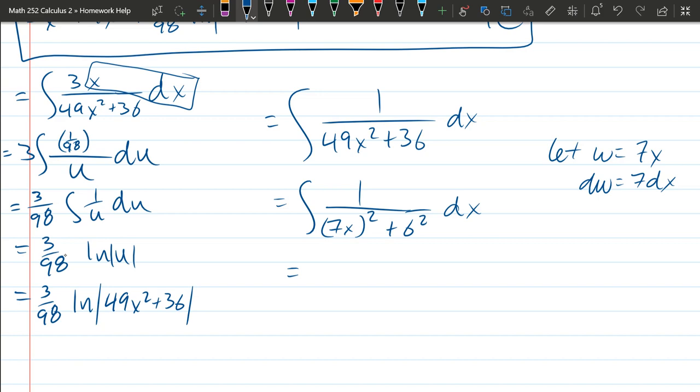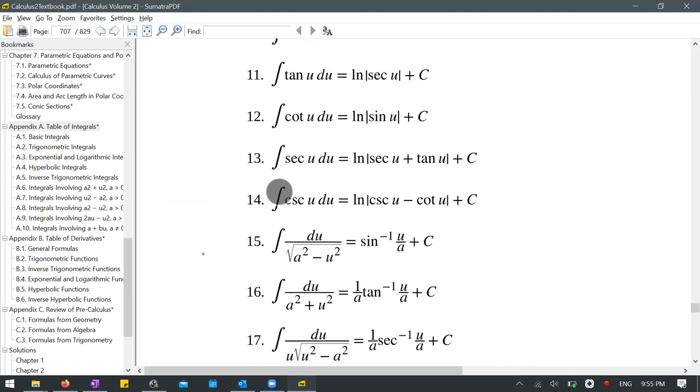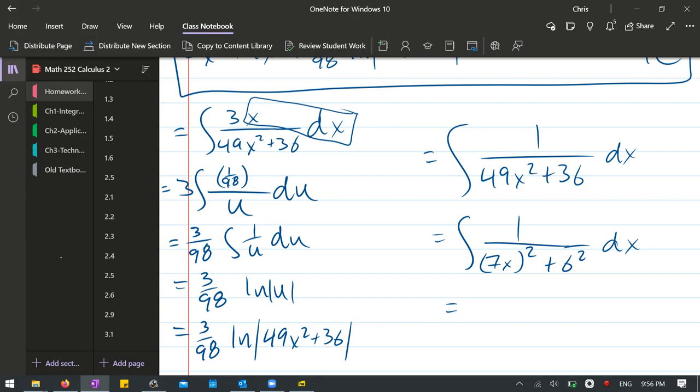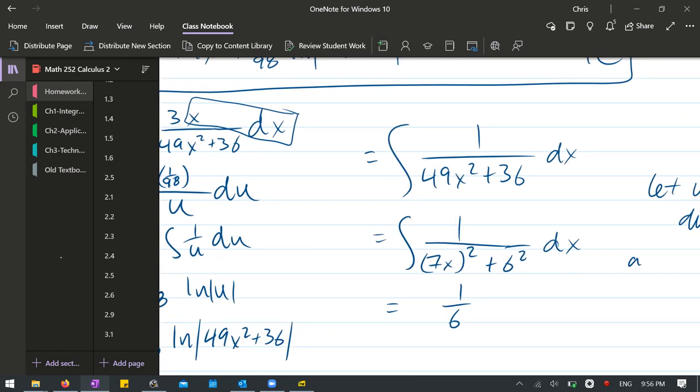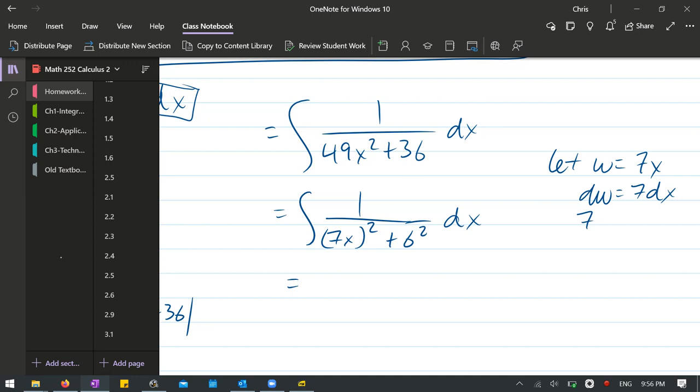We're going to use right there at the bottom of the page. That's going to be 1 over, now our a was 6, 1 over 6 tan inverse w over 6. I better go ahead and make that w substitution before I go too far here. We don't have a 7, so it's 1 7th dw. So that's 1 7th integral w squared plus 6 squared dw. Can I beat the battery timer? 1 7th, so that's by itself. Now it's 1 over, which for us is 1 over 6 tan inverse. Now it was u over a, in our case that would be w over a which is 6. There's no plus constant, we're going to do it at the end. Now unsubstitute everything out. 7 times 6 is 42. Tan inverse, w is 7x over 6.